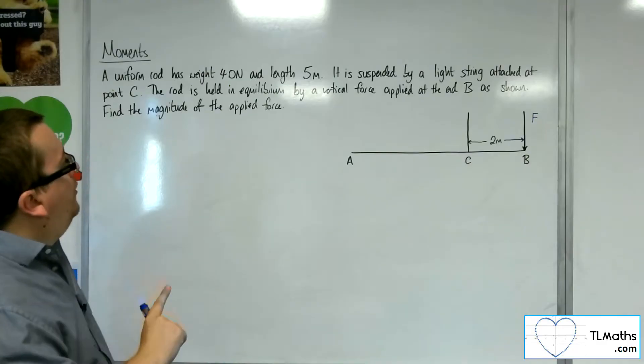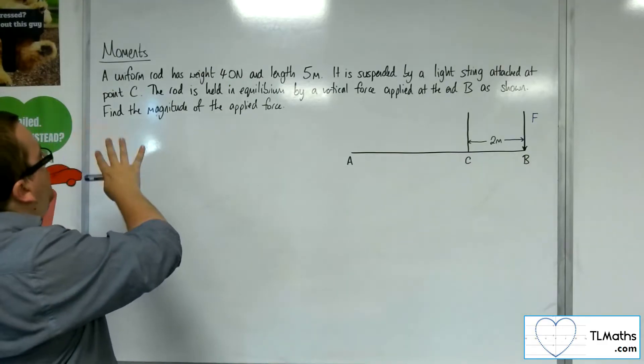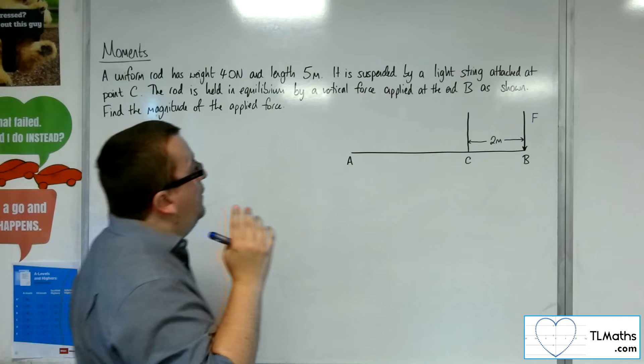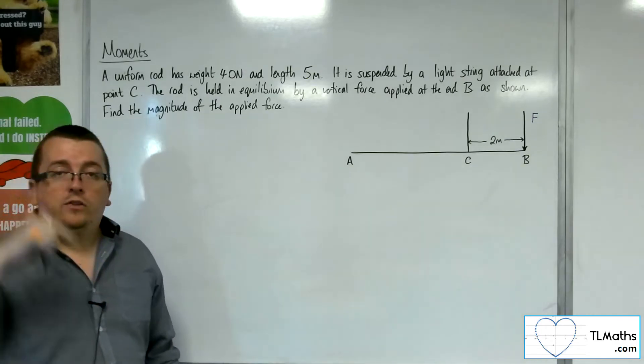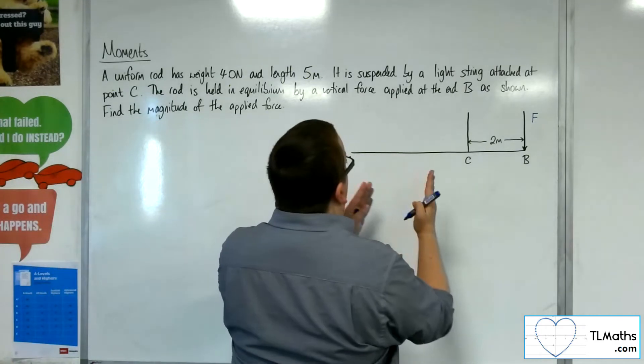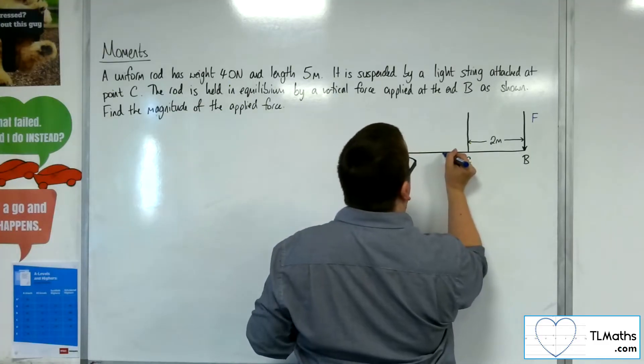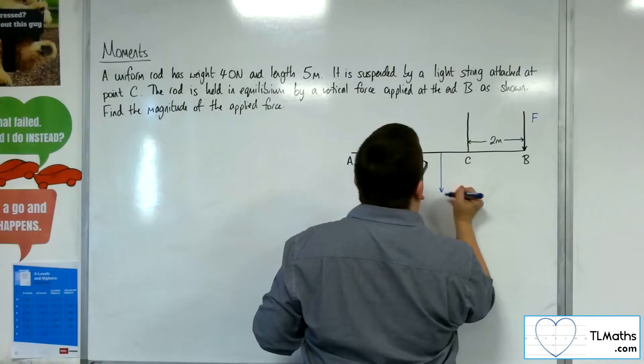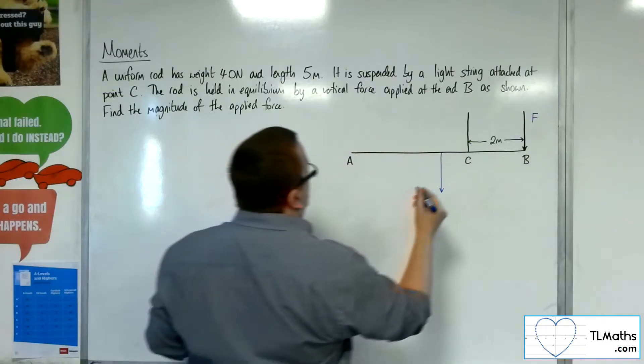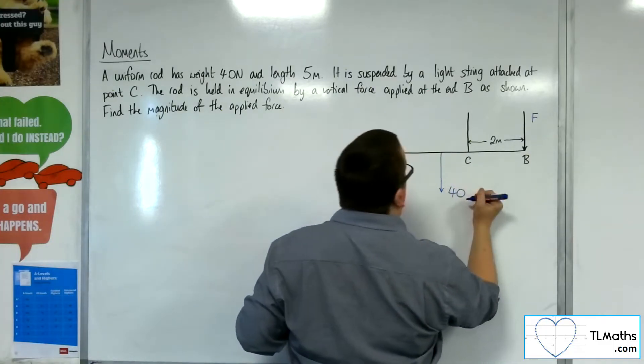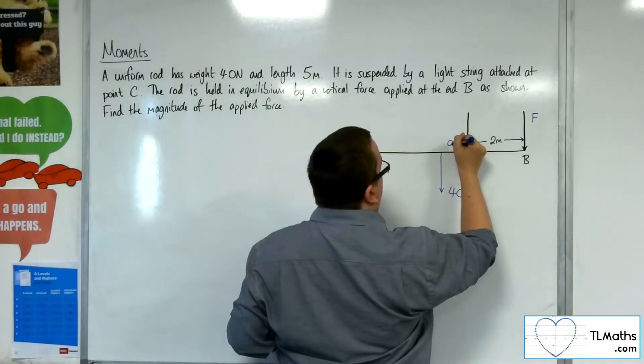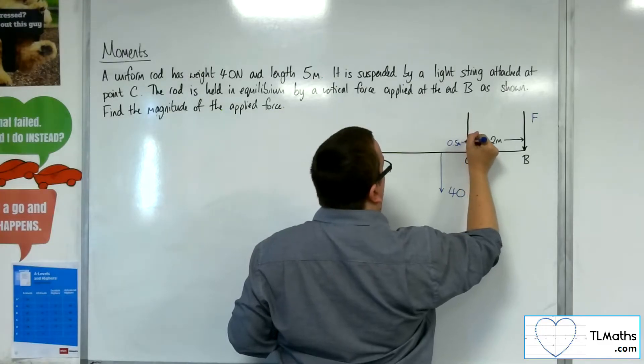Because we've got this uniform rod with weight 40 newtons and length 5 metres, its weight will be working through its centre of mass, which will be 2.5 metres either side. So we've got the weight working downwards, 40 newtons,